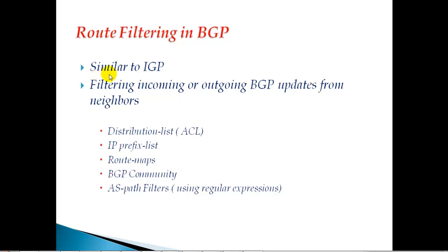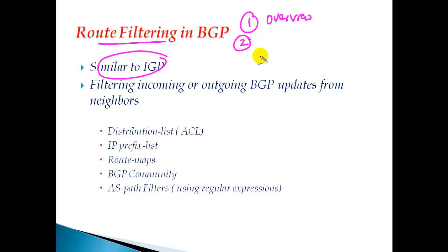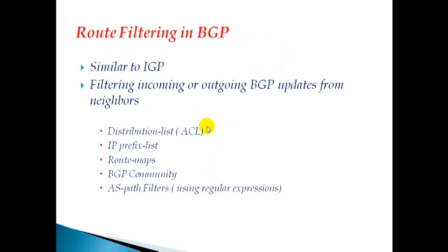In this section we'll try to understand route filtering in BGP. The first thing we'll learn is what exactly route filtering is. It's more similar to IGP route filtering from basic CCNP studies. I'll give an overview of route filtering, then explain some scenarios where it's applicable in BGP, and finally cover some different methods of implementing route filtering.